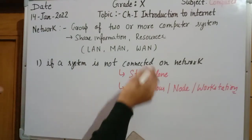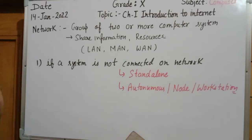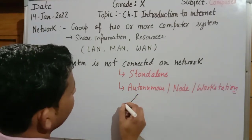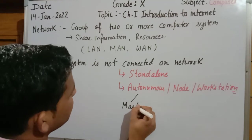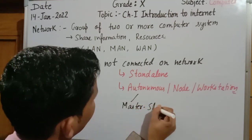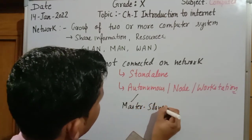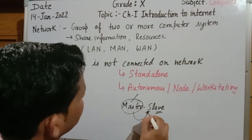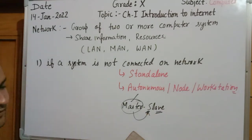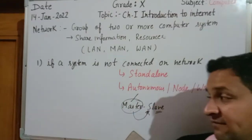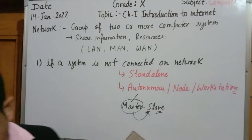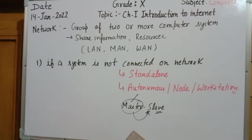In which type of system is there a master-slave relationship? In an autonomous system, there will be a master-slave relationship. One system will be the master and all the rest will be slave computer systems. The slave systems work as clients and the master works as a server.